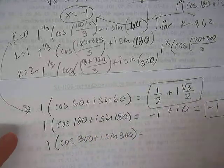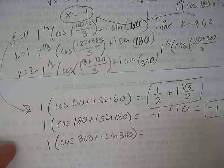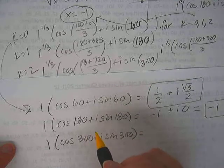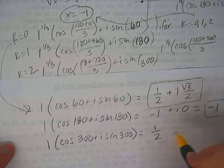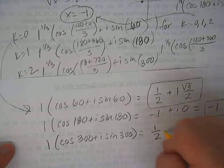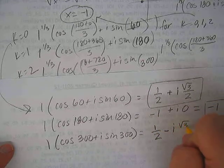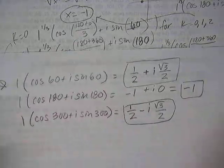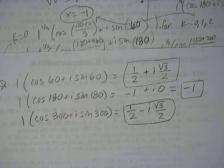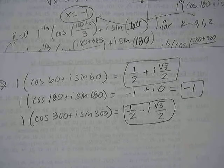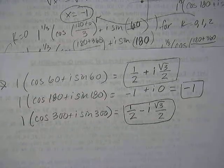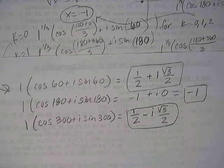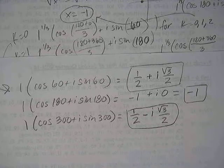And then the last one would be 1 times the cosine of 300 plus i sine 300, which is still a 60 degree reference angle. So cosine, all students take calculus, that would be a positive 1 half. And this time this one would be negative. So there's the three solutions. What does the back of the book say? Oh look, my answer's right here. Yes, we are right. We are correct. Awesome.